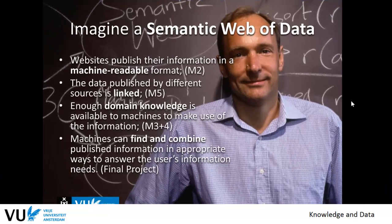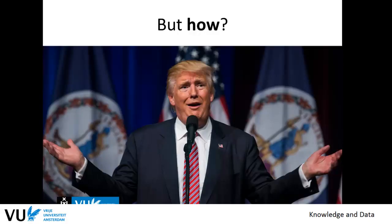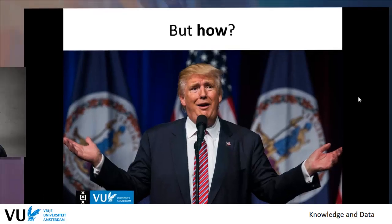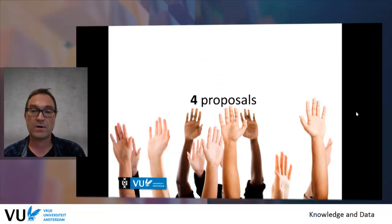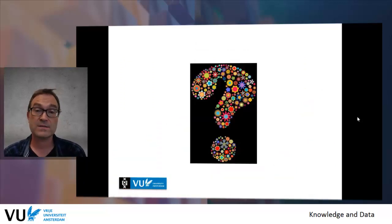Tim suggested four different ways of doing this. Websites should publish their information in a machine-readable format — that's what we just saw with the RDF dataset. The data published should be linked — we haven't seen that yet, but it's very important, and that's what we tackle in module five. There needs to be domain knowledge available so that machines can make use of the data to get information out of it. And then machines can find and combine published information to answer user information needs — and this is what you're going to do in the final project.